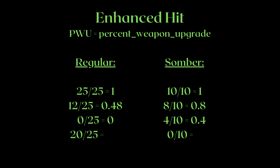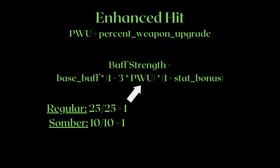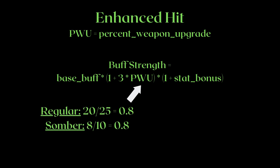For example, when fully upgraded, 25 out of 25 is the same as 10 out of 10, which is 1. 12 divided by 25 is 0.48, and 8 divided by 10 is 0.8. What is 20 divided by 25 and 0 divided by 10? The answers are 0.8 and 0. So a fully upgraded weapon will result in a 1. If we plug 1 into the PWU term, 1 plus 3 times PWU becomes 4. Regardless of which weapon you're using, when maxed out, this term will always be 4. For lower level invasion characters, keep in mind this value changes — at 20 out of 25 or 8 out of 10, this term will result in 3.4 instead of 4.